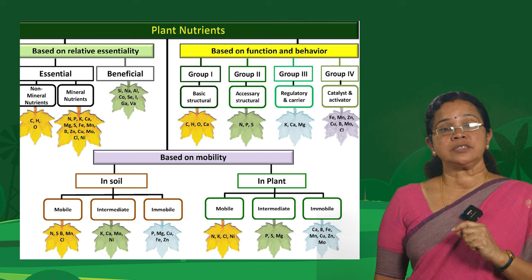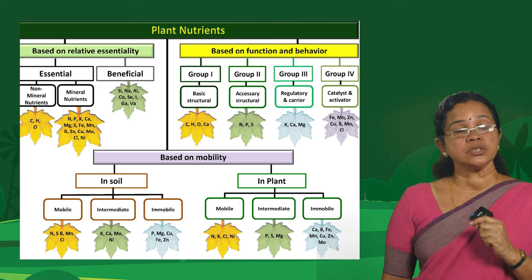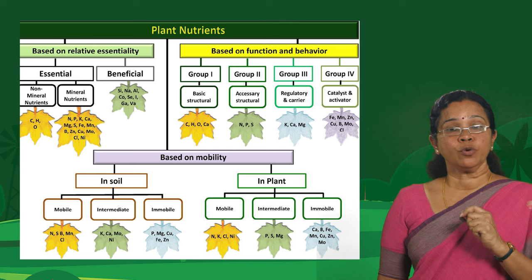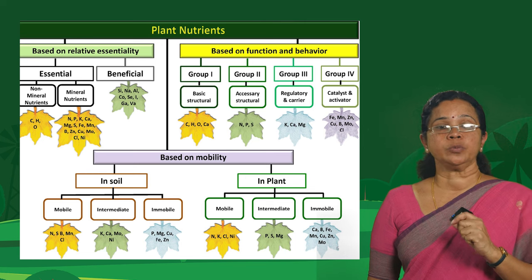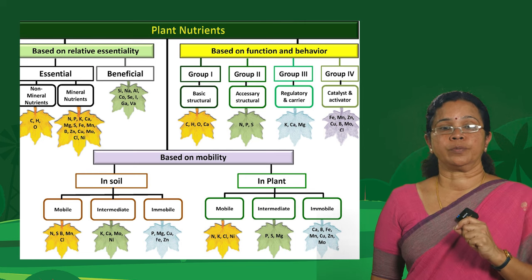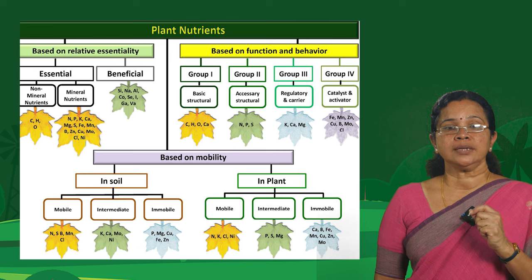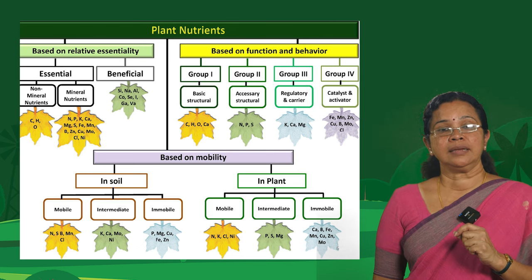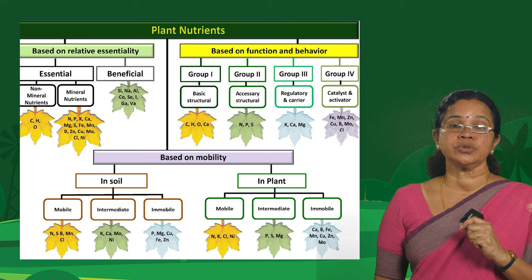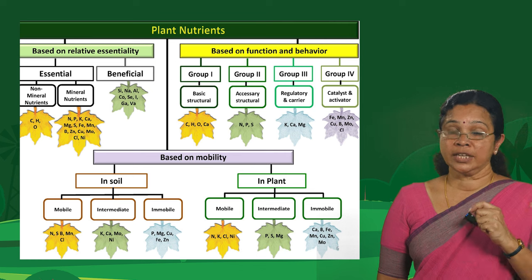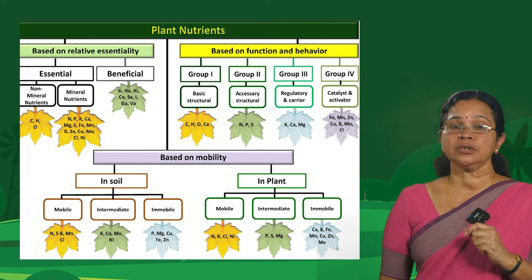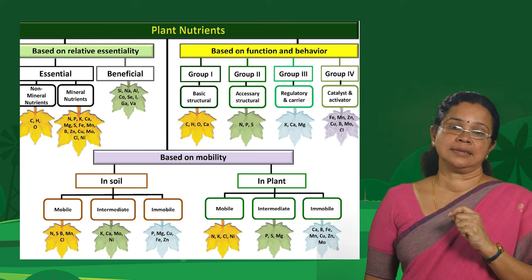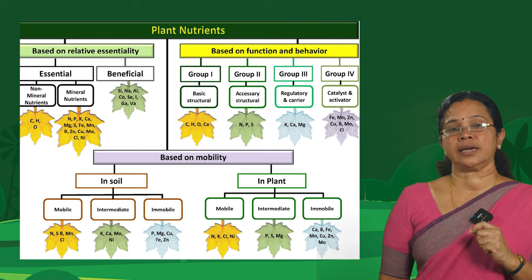Another type of classification is based on function and behavior, where you can see four groups. Group 1 covers basic structural nutrients; Group 2, accessory structural nutrients; Group 3, nutrients with regulatory function; and Group 4, nutrients which act as catalysts for certain biochemical reactions.